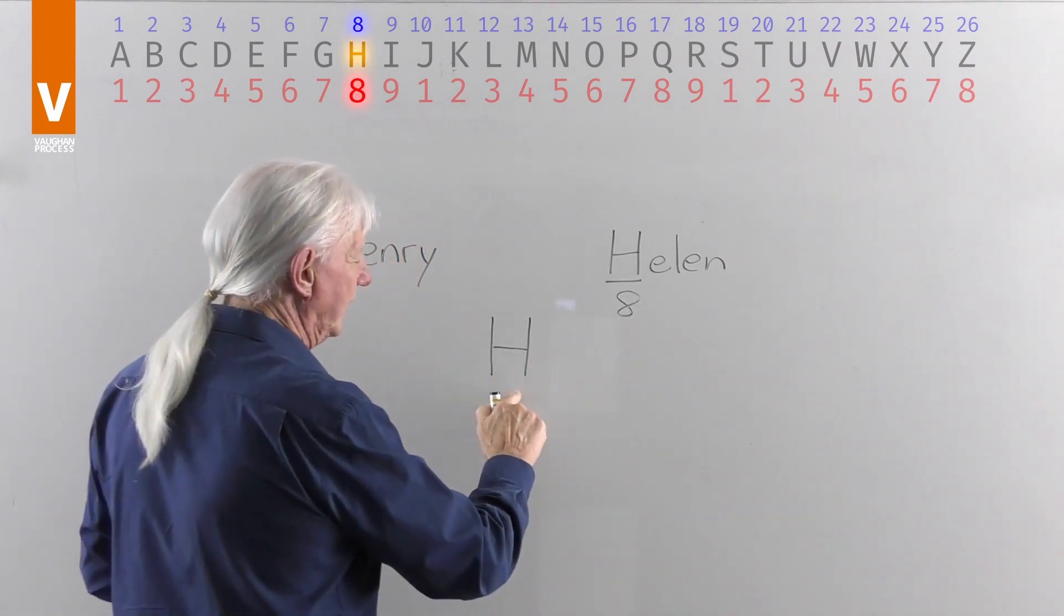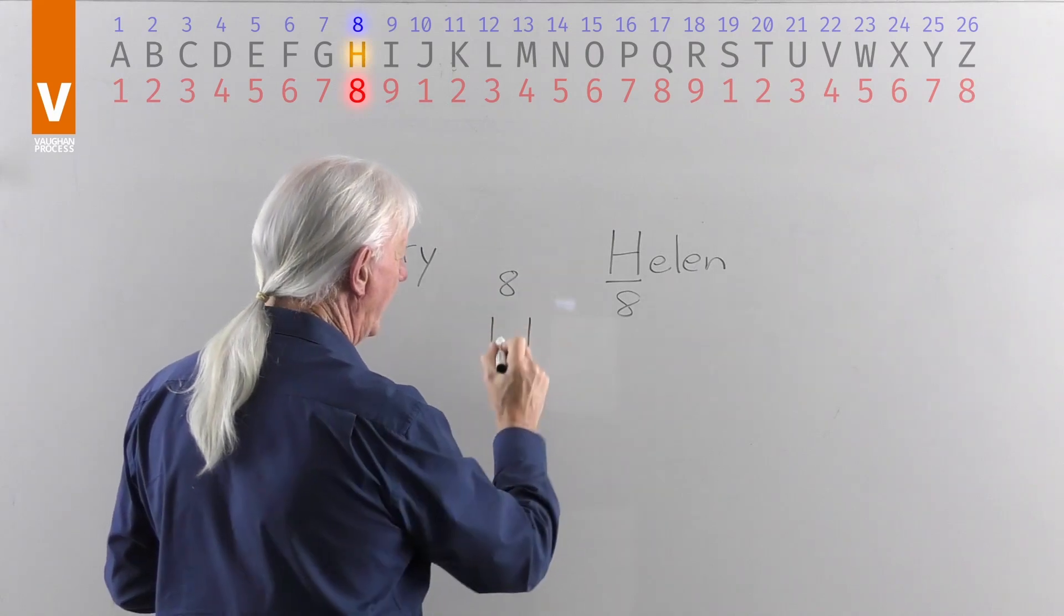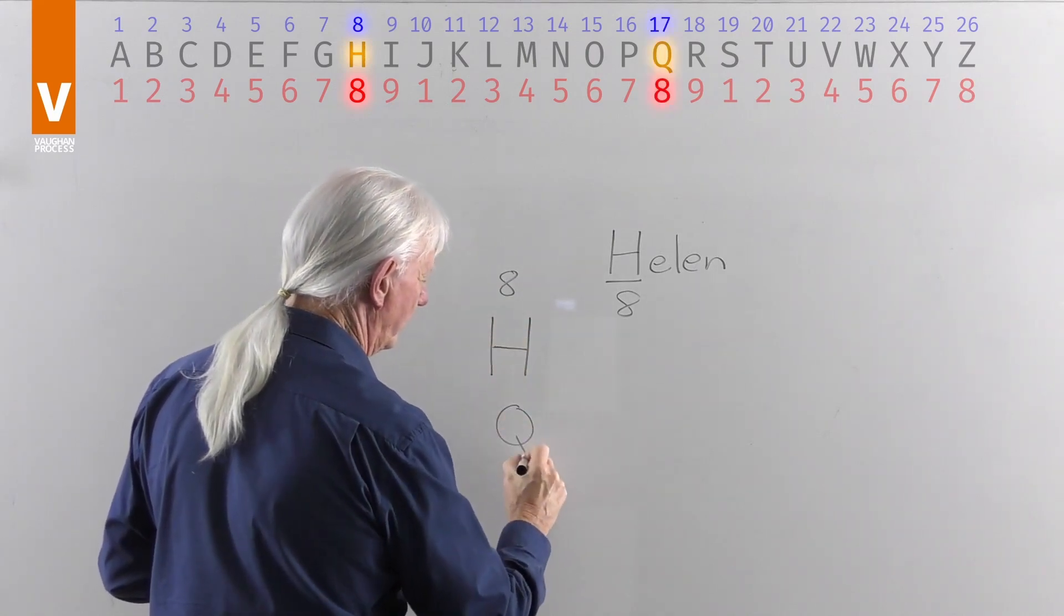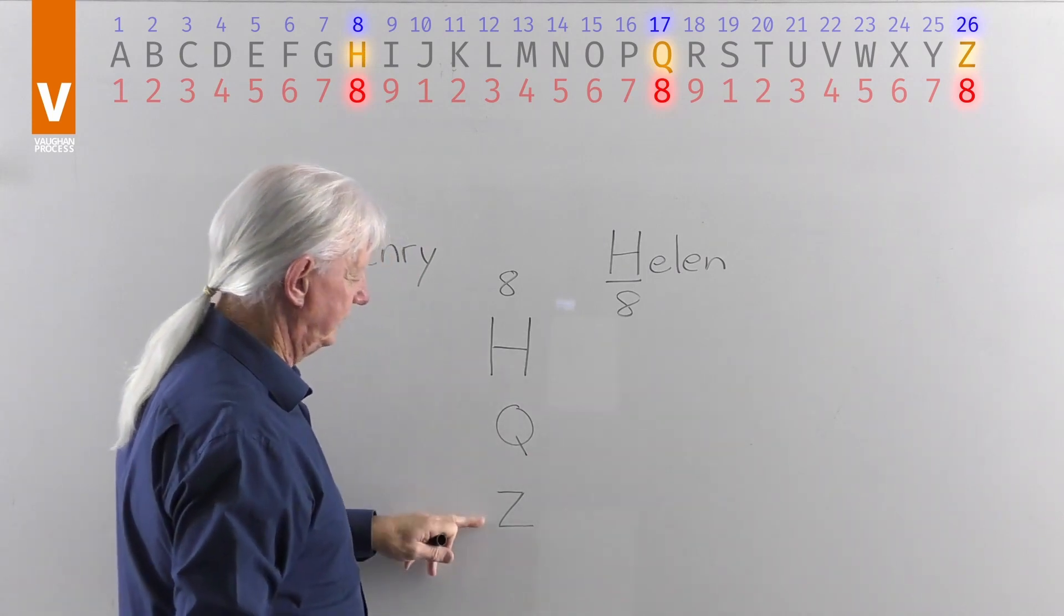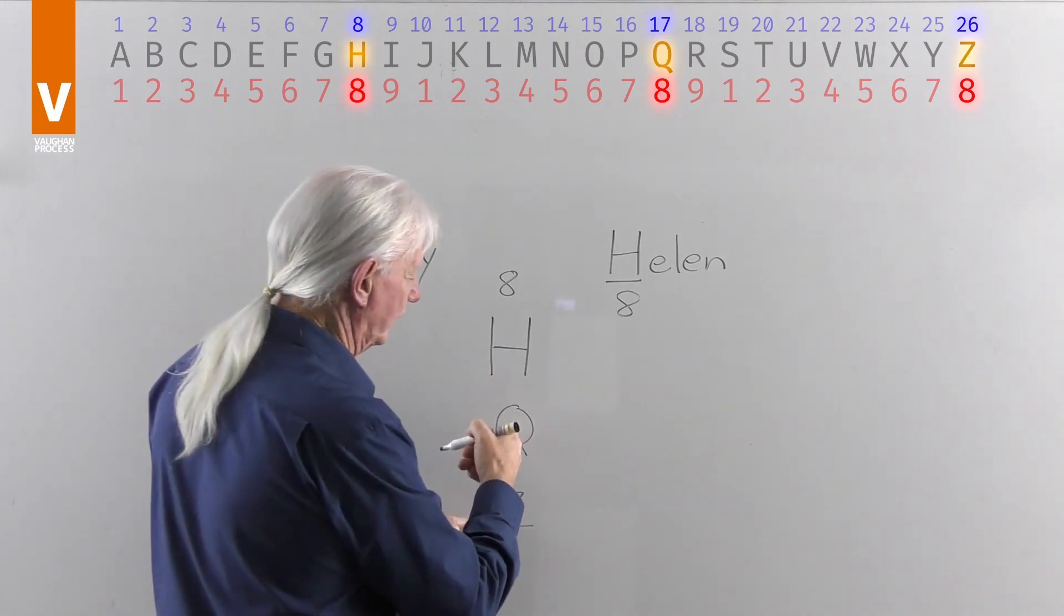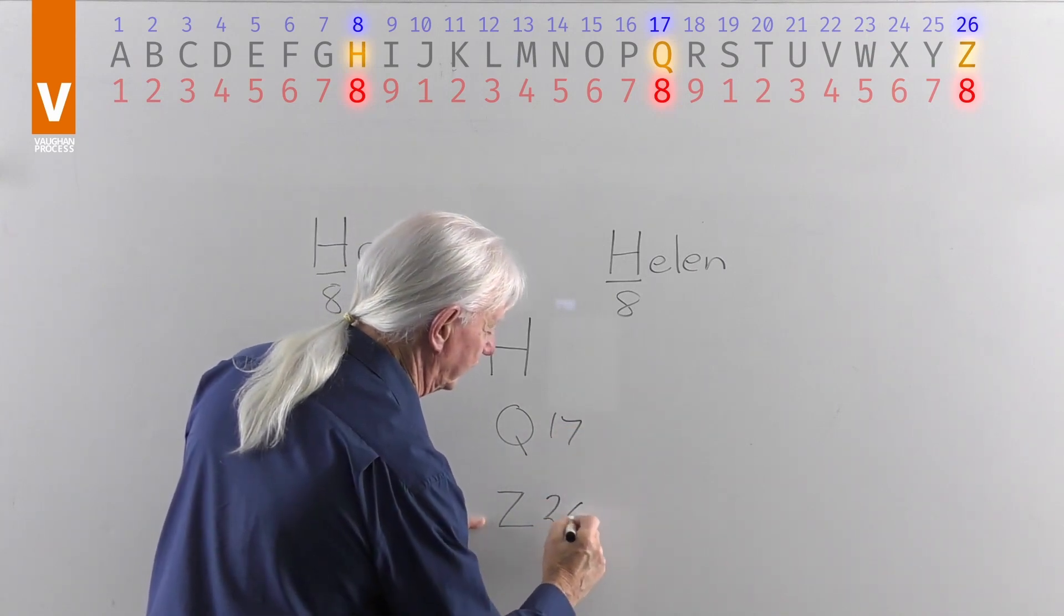There are three letters that have a value of 8: H, Q, and Z. And although they are 8, each one of them, this one is the 17th letter and this is the 26th letter of the alphabet.